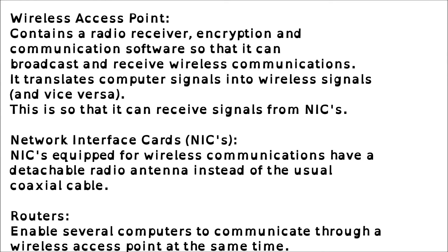A wireless access point contains a radio receiver, encryption and communication software so that it can broadcast and receive wireless communications. It translates computer signals into wireless signals and vice versa.